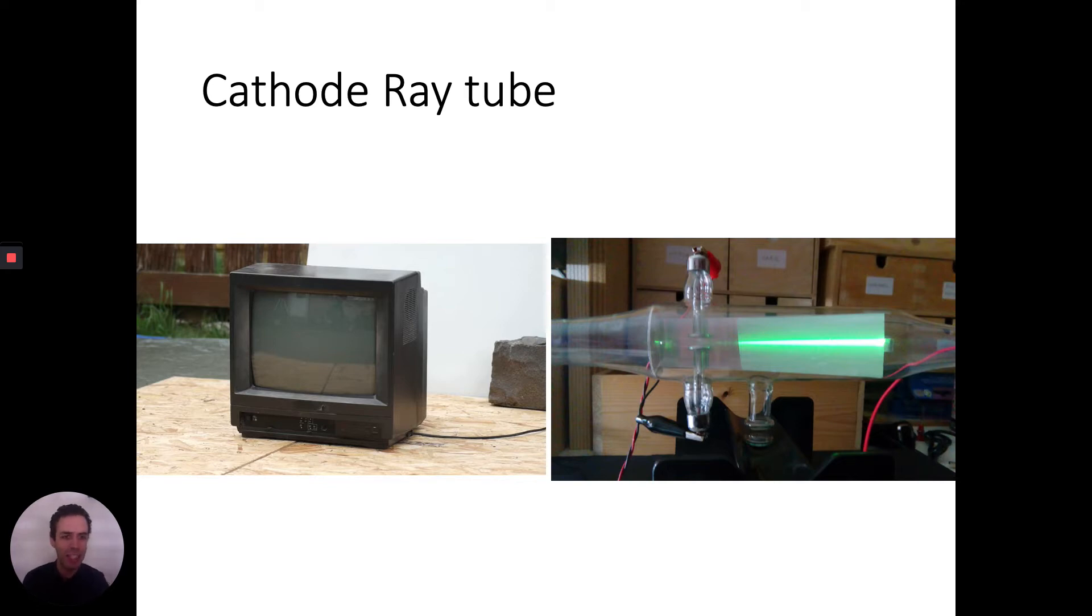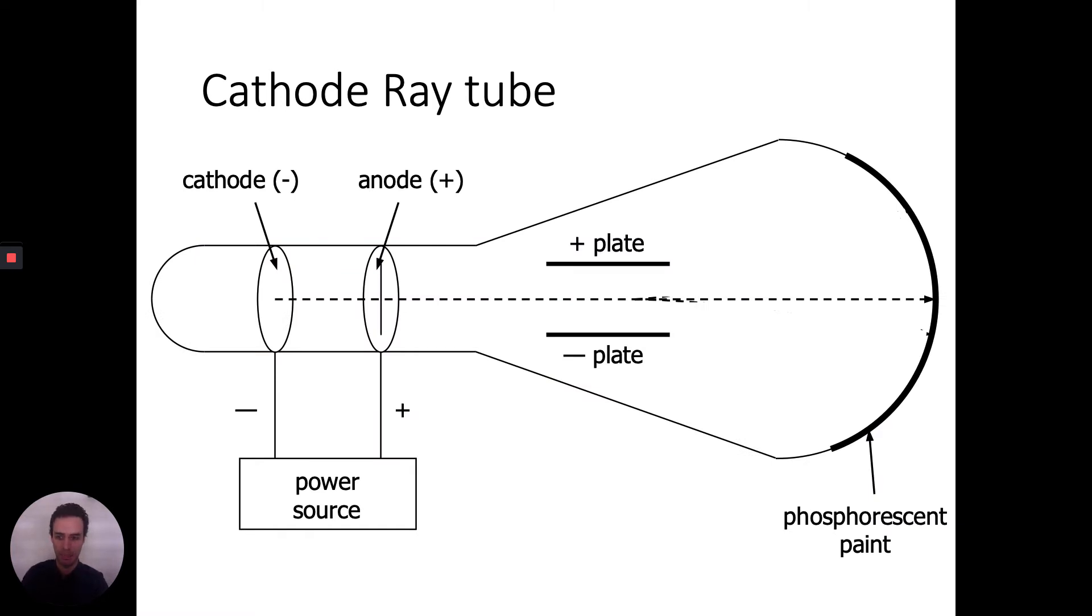You can see there's a glass tube like a fancy light bulb, but there's more stuff inside. Here's a diagram so we can get a better sense. Over here we have two electrical parts. There's a cathode, the cathode is negative. Here's the anode, the anode is positive. And there is a beam of light that shines from the cathode through the anode. And over here on the right side, this edge of the light bulb is painted in such a way that when the cathode ray hits the paint, it glows. So you can see where the cathode ray is hitting because of the phosphorescent paint.